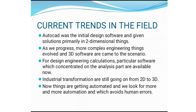We have progressed into a modern era and are handling advanced technologies and automations. Still, the 2D to 3D transformation is ongoing in companies. Even now, people are still adapting from 2D to 3D technology depending on the company. An advanced company might have adapted to a 3D environment 20 or 30 years back, but small or medium scale companies are still undergoing that adaptation. Now things are getting automated, and we look for more automation, which avoids human errors.